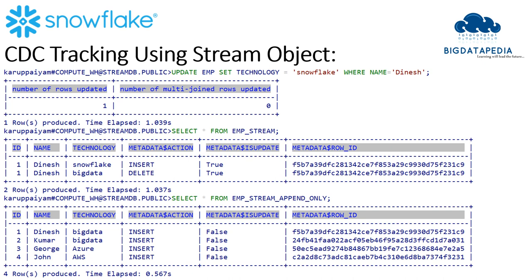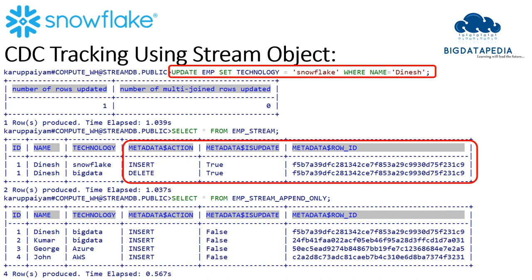Let me update some records on the EMP table. I execute: UPDATE EMP SET technology = 'Snowflake' WHERE name = 'Dinesh'. One row was affected. Now in the EMP_stream object, metadata reflects both a DELETE and an INSERT on the same row ID — first the delete statement executes, then a new record is inserted with the updated value, and metadata is_update shows as true because an update happened.